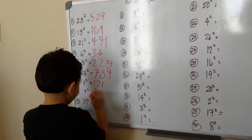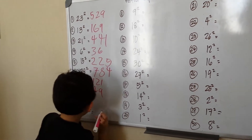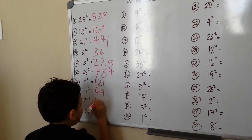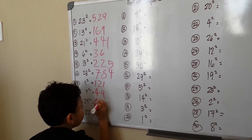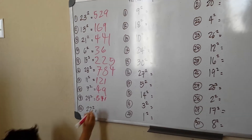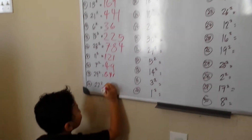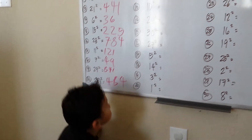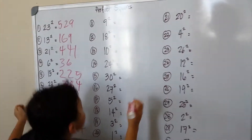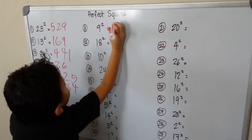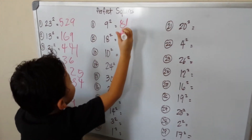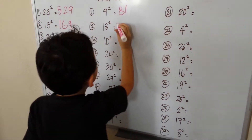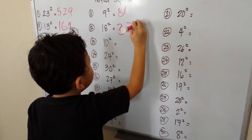7 squared is 49. 29 squared is 841. 22 squared is 494. 9 squared is 81.